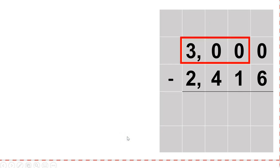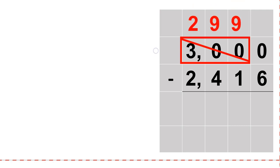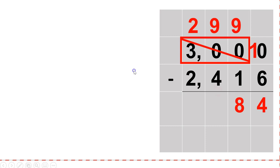Now we can also use the box method. If I have a zero and my neighbor is a zero, I want to go all the way over until the first number that's not zero and put a box around it. I can take one away from that. If I take one away from 300, it's 299. The one I took away goes in front of that zero. Now all my top numbers are bigger than the bottom, and I can subtract: ten minus six is four, nine minus one is eight, nine minus four is five, and two minus two is zero.